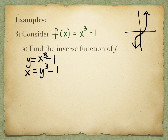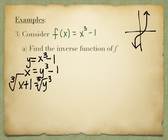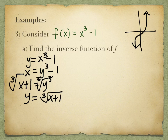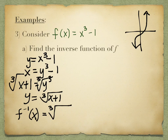Solve for y. How do I solve x equals y cubed minus 1 for y? Add 1 — so I've got x plus 1 equals y cubed. Then take the cube root. So my solution is y equals the cube root of (x plus 1). So I have the inverse: f inverse of x equals the cube root of (x plus 1).